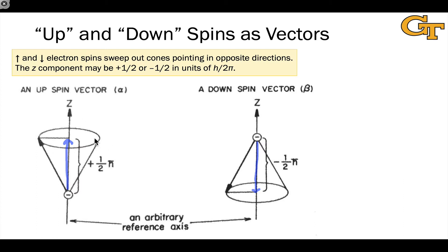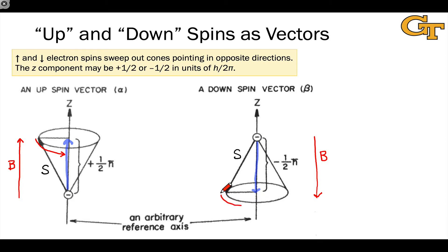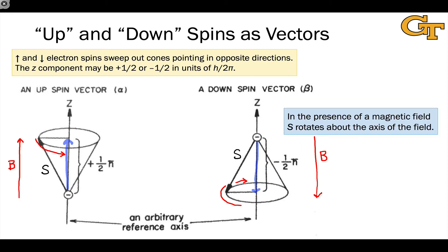When a magnetic field is applied parallel or anti-parallel to the spin, we gain knowledge of the x and y components, causing the electron spin vector to precess or rotate around the direction of that magnetic field. Both spins can do this — if we apply a magnetic field opposite to the down-spin, it will precess around that field direction. This precession has the capability to change a triplet state into a singlet state, or vice versa. These magnetic fields may also come from internal magnetic moments associated with other electrons or nuclei.